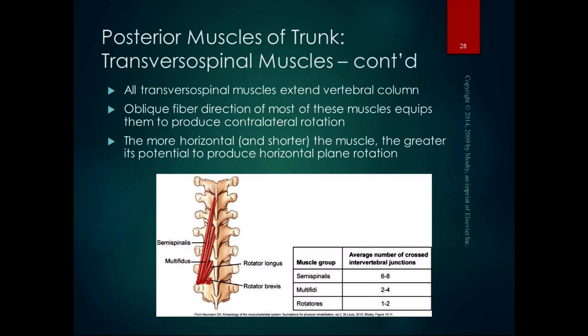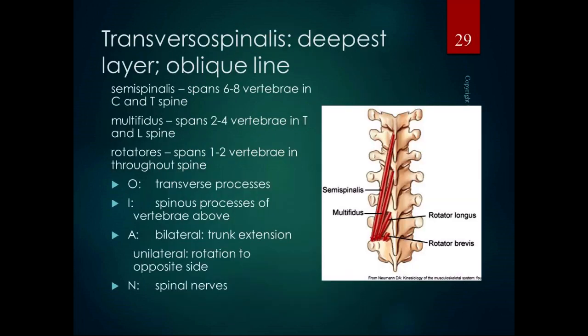All transversospinal muscles extend the vertebral column when contracting bilaterally. The oblique fiber direction also equips them to produce contralateral rotation, because the spinous process moves toward the transverse process. The more horizontal and shorter the muscle, the greater its potential for horizontal plane rotation — so the rotatores are primary rotators as their name suggests. The longer semispinalis has more extension capability. These are a deeper group than the erector spinae and serve as extensors and rotators.